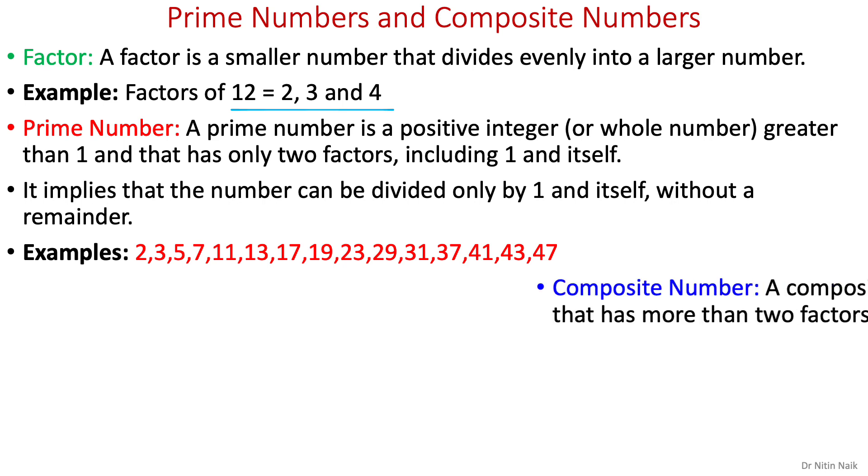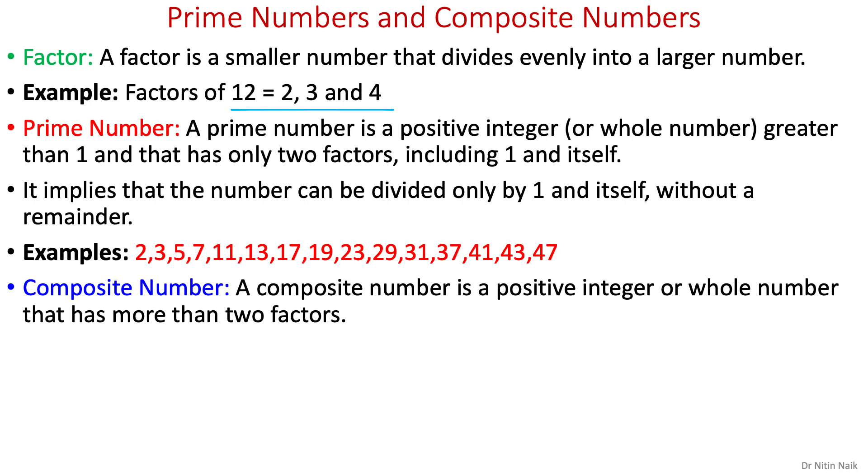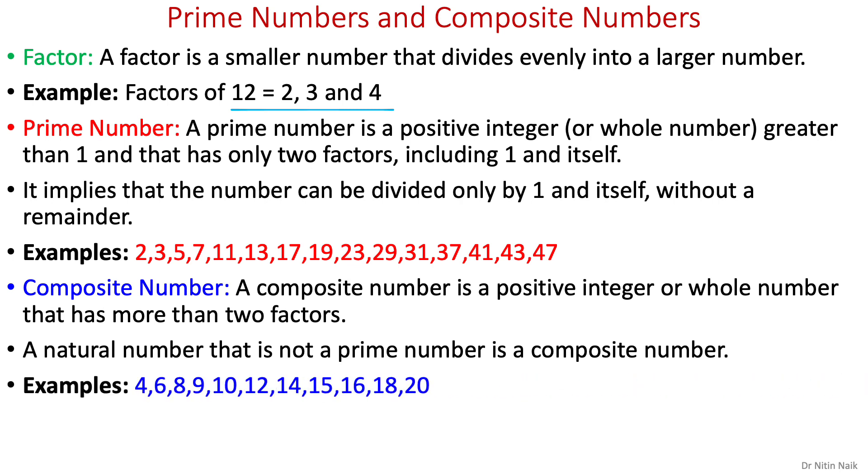Now look at composite numbers. A composite number is a positive integer that has more than two factors, or simply a natural number that is not a prime number. Let's look at some examples here. Note that the numbers 0 and 1 are neither considered prime numbers nor composite numbers.